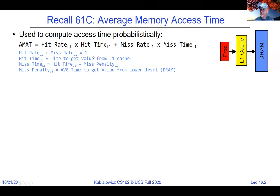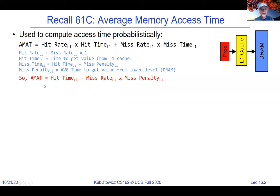Clearly the hit rate plus the miss rate better be one or something weird is going on. The hit time is how long it takes when we hit, and the miss time is how long it takes when we miss. The hit time, which is the time to get from the L1 cache, is actually a part of the miss time as well. When we talk about miss time, it's not only the penalty of going down to DRAM and pulling it into the L1 cache, but then we have one more hit time afterwards. So miss time is actually hit time plus miss penalty.